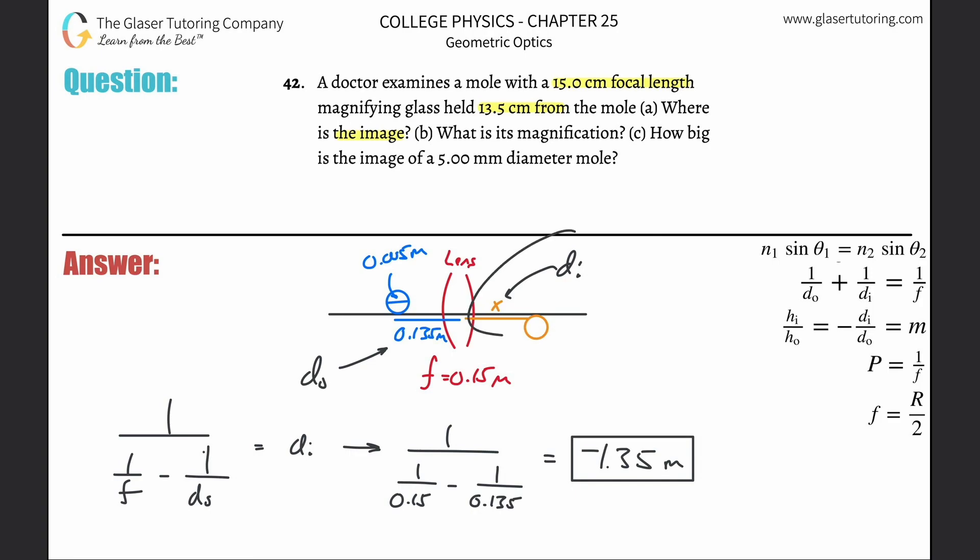Now we might not know that ahead of time, but anytime I drew the picture and I get a negative answer, the negative sign implies that the image is not going to be on the right hand side of the lens if the object is on the left side. This means it's going to be on the left side of the lens. So the image is not over here.